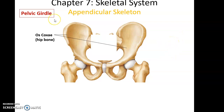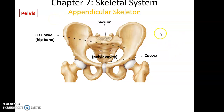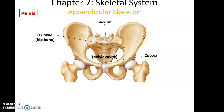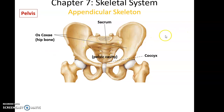The pelvis is different from the pelvic girdle. The pelvis consists of the bones that help to form the pelvic cavity. This includes the two os coxae, the sacrum, and the coccyx of the axial skeleton. So four bones make up the pelvis, forming the pelvic cavity.